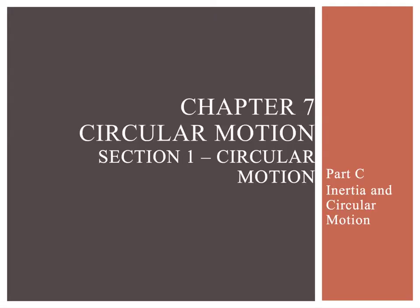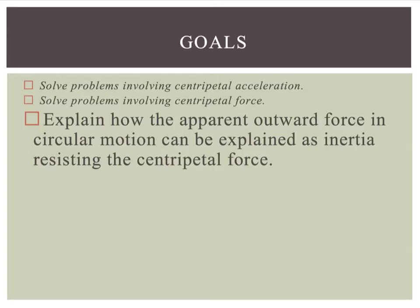Chapter 7, Circular Motion. We're still in section 1, part C. We're going to talk about inertia and its connection to circular motion, and explain how the apparent outward force in circular motion can be explained as inertia resisting the centripetal force.